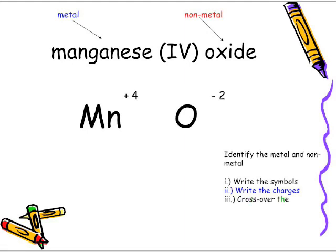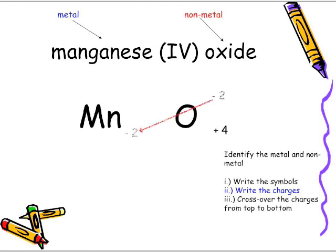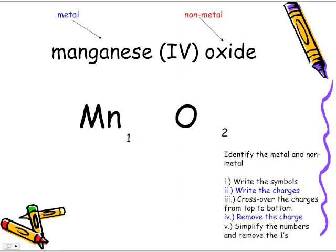We cross over from top to bottom, then remove the charges. We simplify two to four, which becomes one to two, and remove the ones. So the formula for manganese(IV) oxide is MnO₂.